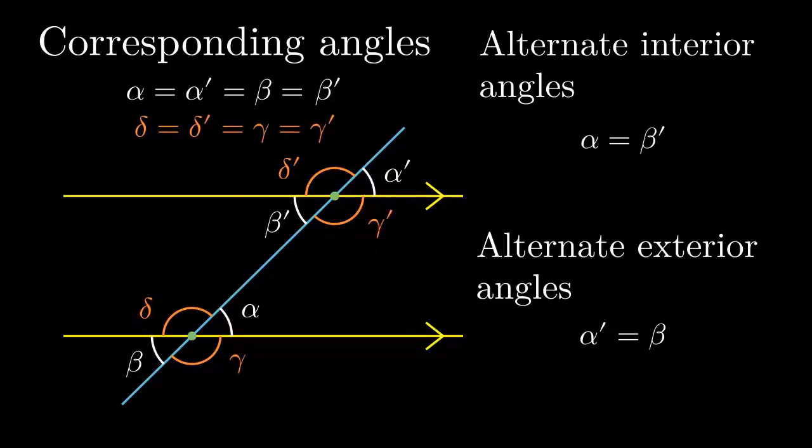Then, delta and gamma' dash are alternate interior angles. And gamma and delta' dash are alternate exterior angles. I would like to make one note.